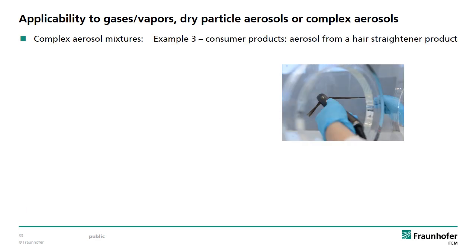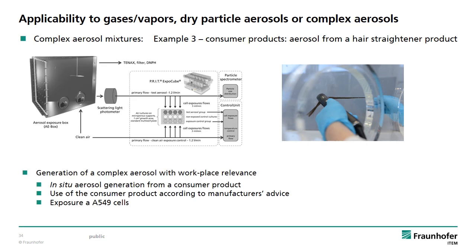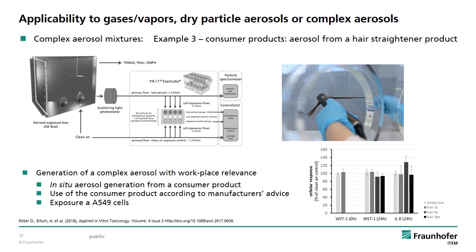As a third and last example for complex aerosol applications we will have a short look at the testing of a workplace-relevant aerosol that might be produced during use of a hair straightener product by professional hairdressers. After development of an appropriate setup and procedure it was possible to handle the consumer product completely according to the manufacturer's advice and hairdressers' practice during the in vitro testing, thereby generating high relevance of the test aerosol. Again A549 cells were exposed and in this case indicated no significant cell toxic potential up to the highest technical concentrations of the aerosol, which were as a worst case scenario clearly above real world conditions.